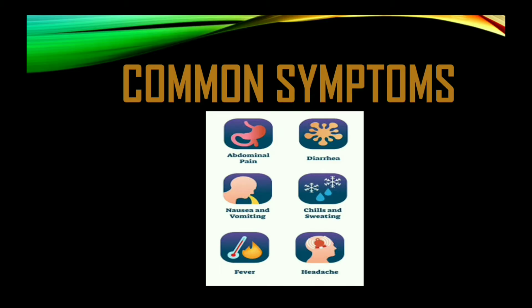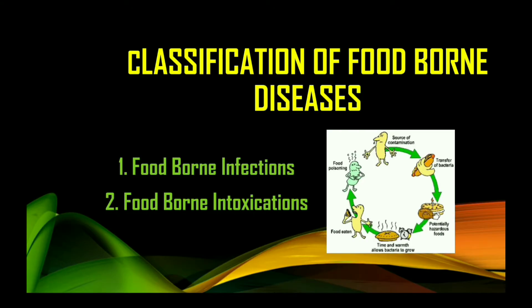It is very important for these signs and symptoms to be controlled so that persons do not become dehydrated and eventually die. Now let us look at the classification of foodborne illnesses. We know what foodborne illnesses are and we know the causes — now let's look at the types. There are two types: foodborne infections and foodborne intoxications.